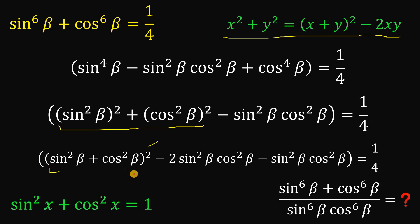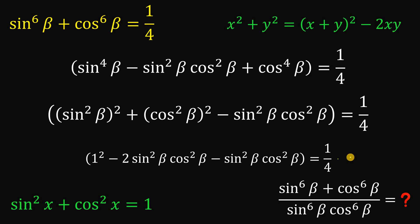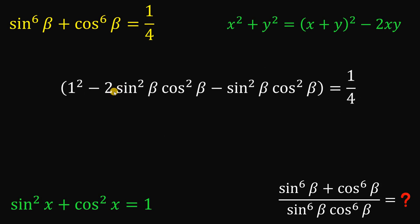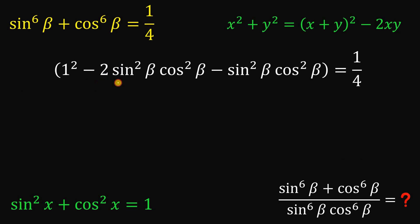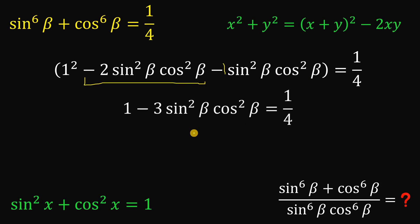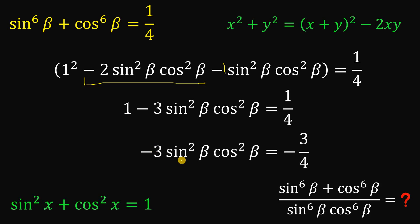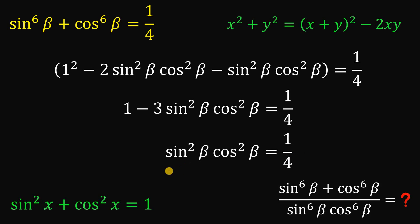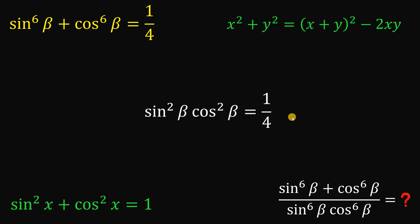Again, sine squared beta plus cosine squared beta is our Pythagorean identity, so it is equivalent to 1. Now focusing on this result, we can combine the negative 2 sine squared beta cosine squared beta with the negative 1 sine squared beta times cosine squared beta, giving negative 3. Now subtracting 1 on both sides gives negative 3 times sine squared beta times cosine squared beta equals negative 3 over 4. Dividing both sides by negative 3, we get sine squared beta times cosine squared beta equals 1 over 4.